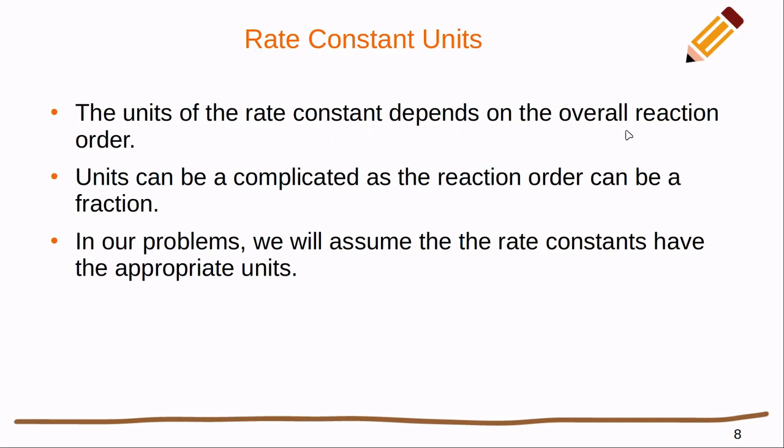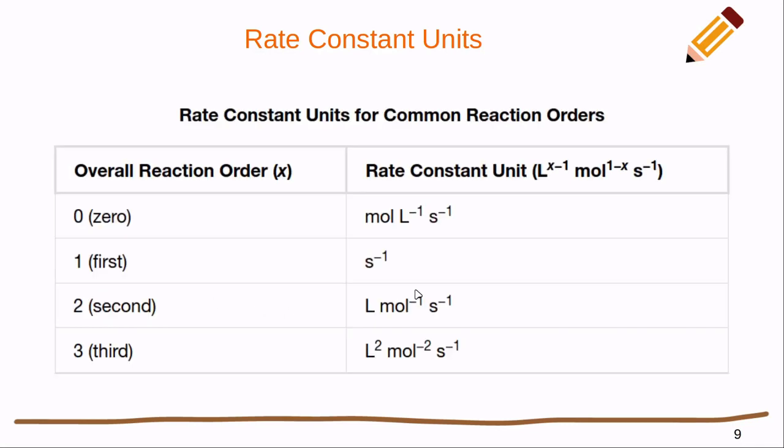The units of the rate constant depend on the overall reaction order. In our homework problems we're just going to assume that the rate constants have the appropriate units that they need to have, but we can look at what those units would be. So if our overall reaction order was zero, meaning it does not depend on the concentration of any of the reactants, then we're going to get a concentration, molarity per second, which is moles per liter per second.